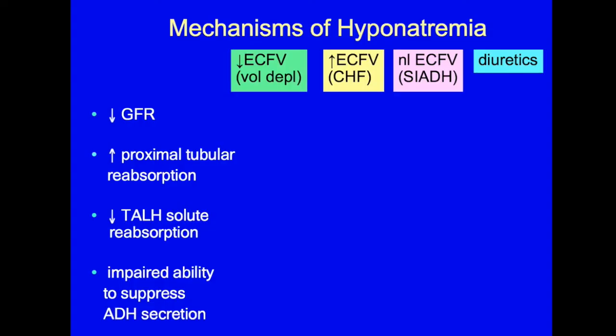Note that hyponatremia can develop in patients with low, high, or normal ECF volume, which is the way that hyponatremic patients are often classified clinically. Severe volume depletion increases the risk of hyponatremia because it impairs free water excretion by decreasing GFR due to vasoconstriction and decreased renal blood flow, increasing proximal reabsorption due to renin-angiotensin and sympathetic activity, and stimulating ADH secretion, not allowing it to be turned off.